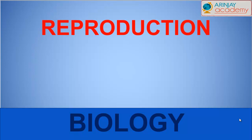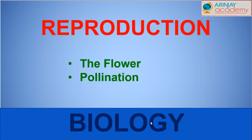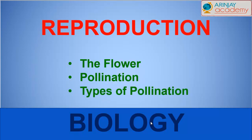Let's take a look at how reproduction takes place and today we look at the flower. The flower comprises of various parts but it reproduces by a process called pollination, and there are different kinds of pollination so we'll have a look at those also.